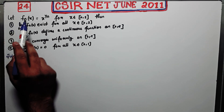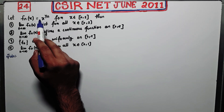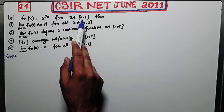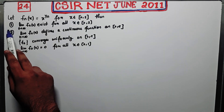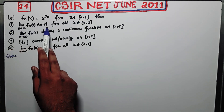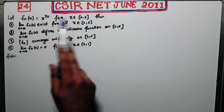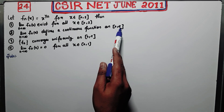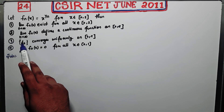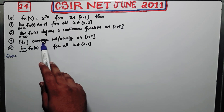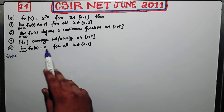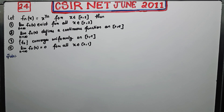Let fn(x) = x to the power 1/n. This is a sequence of functions for all x belonging to [0,1]. The question asks: first, whether the limit of fn(x) exists for all x in [0,1]; second, whether the limit defines a continuous function on [0,1]; third, whether fn converges uniformly on [0,1]; and fourth, whether the limit of fn(x) equals 0 for all x in [0,1].